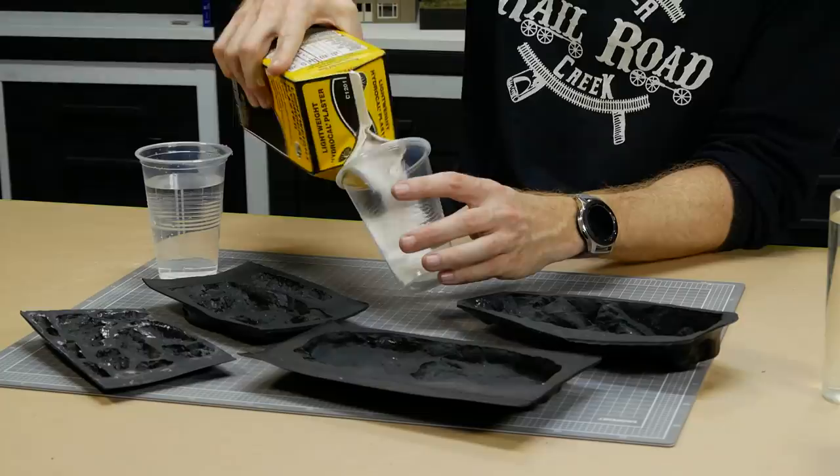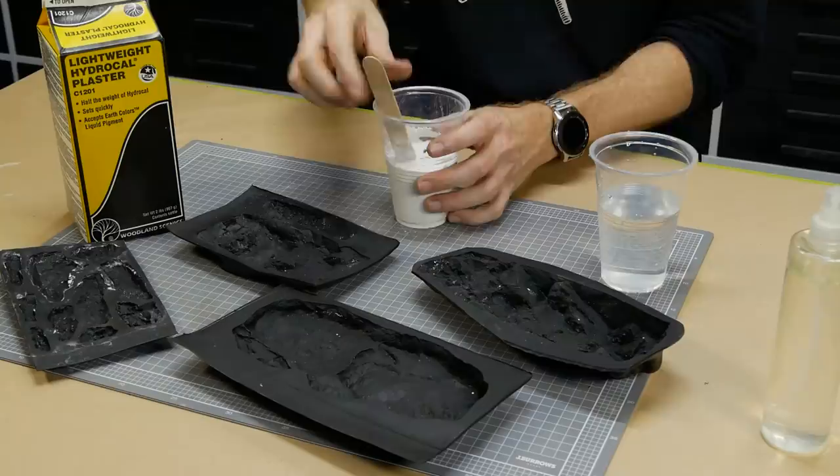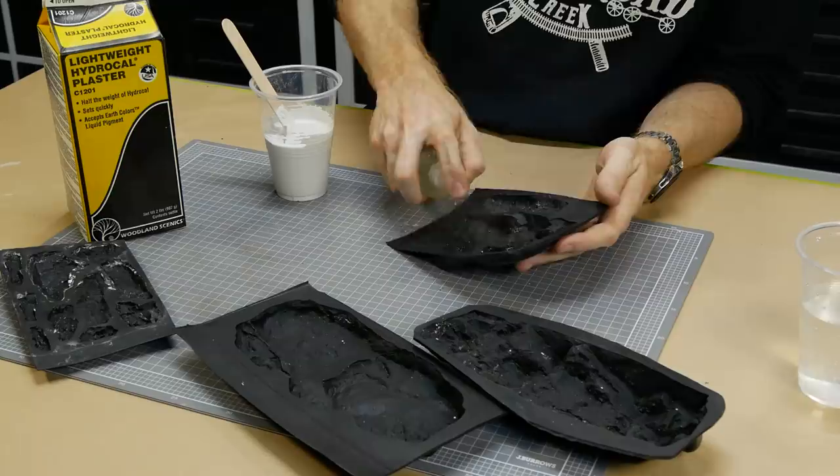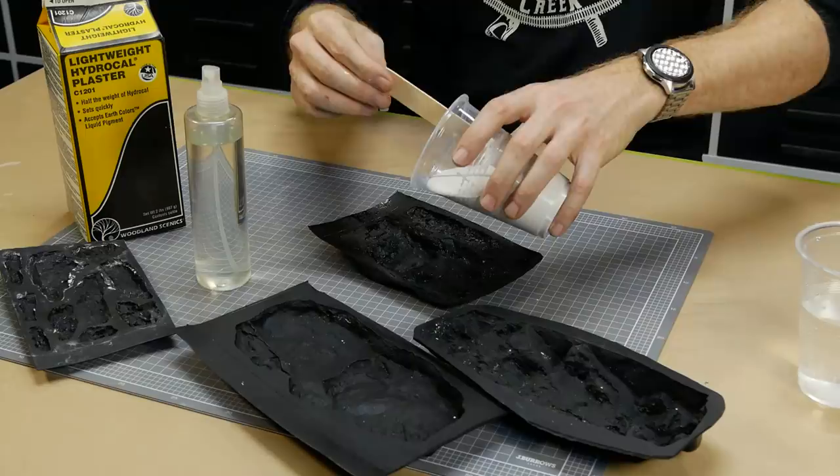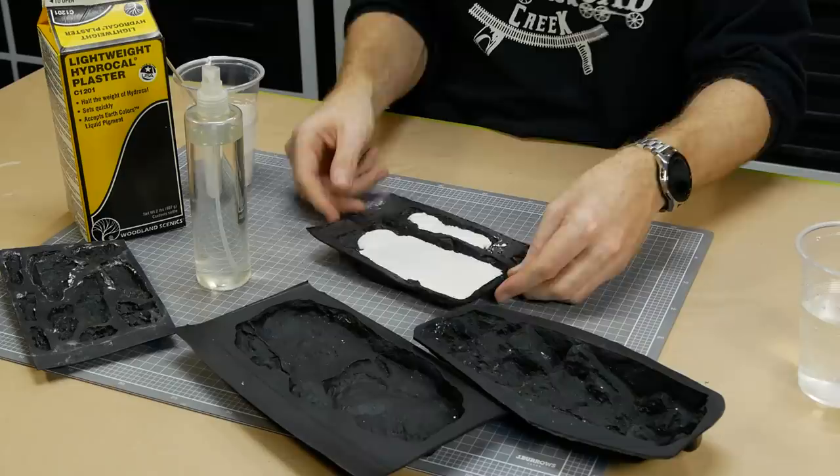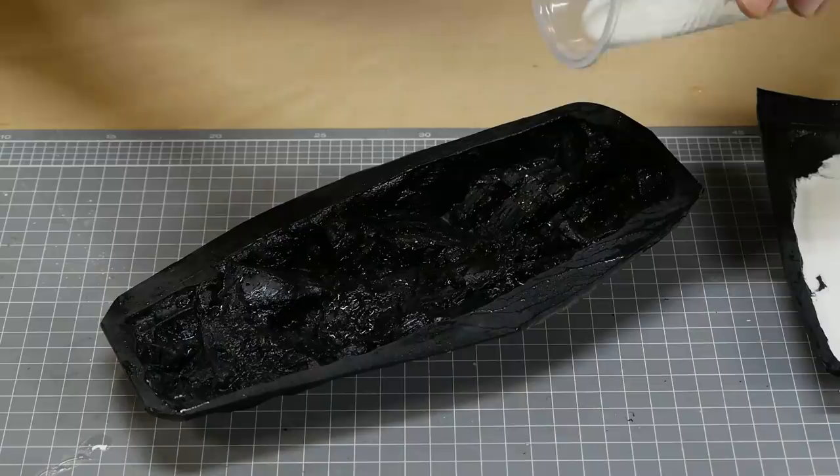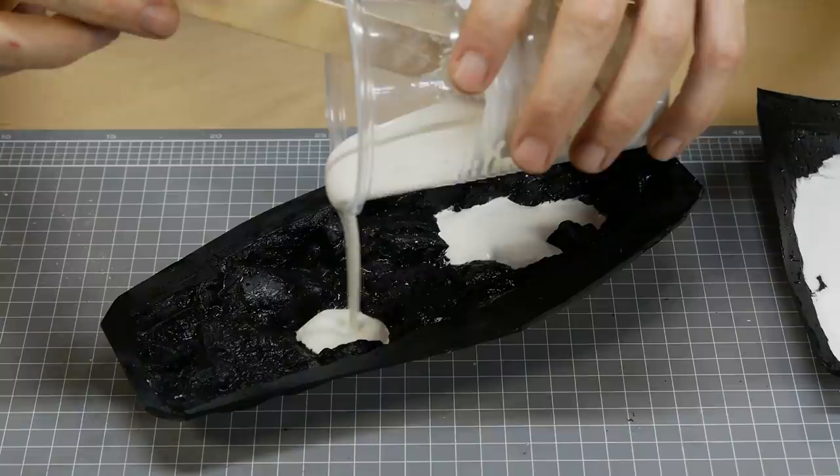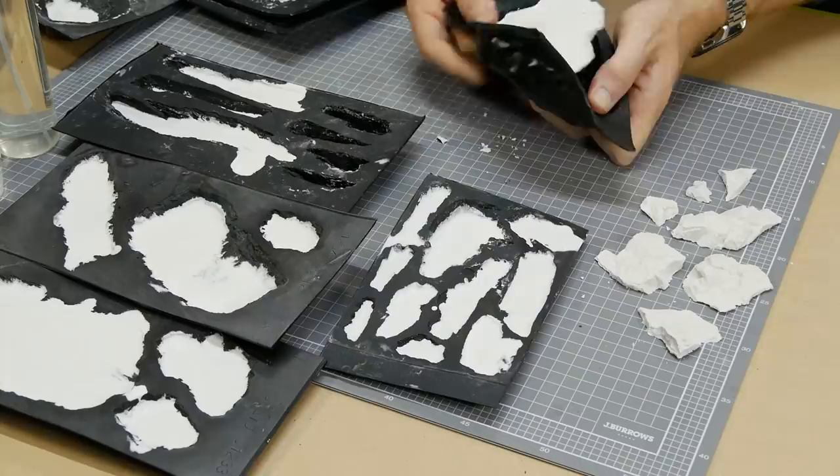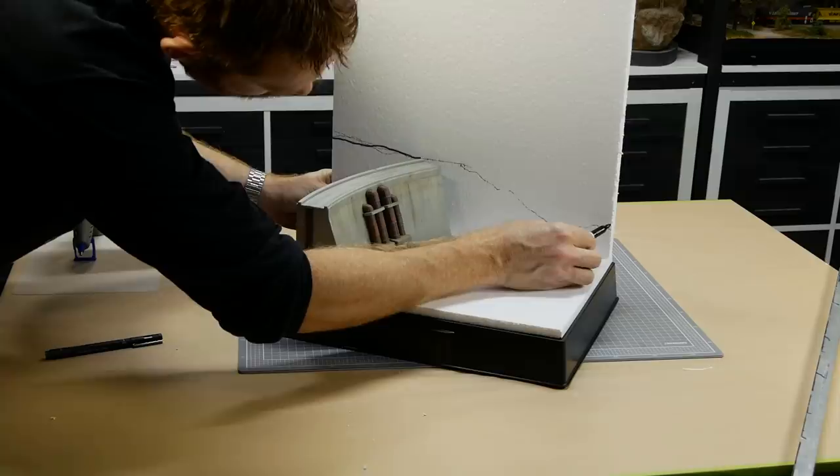Dams usually have rocky surroundings. I'm using lightweight hydro-cal to create the rock face using a variety of woolen scenics rock molds. The hydro-cal is mixed up as per the instructions. Before pouring into the mold I make sure to pre-wet the mold. This helps the plaster get right down into the small cracks and also helps to prevent bubbles. Tapping the mold after filling it also helps remove the bubbles. You don't always need to completely fill the mold either. By only filling it part way you can get different styles of rocks. Once dry the rocks are released from the mold.